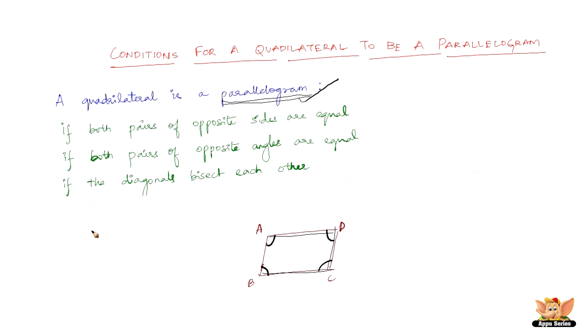The third condition states that if the diagonals bisect each other. Now, say the diagonals here are BD and AC. Now, if these two diagonals bisect each other, that is if AC bisects BD and BD bisects AC, then the given quadrilateral is definitely again a parallelogram.